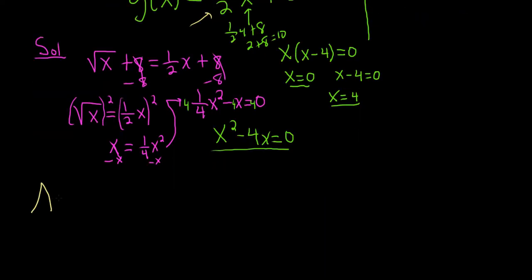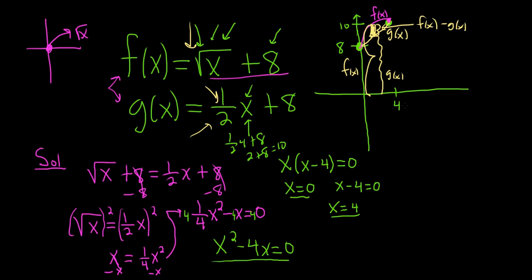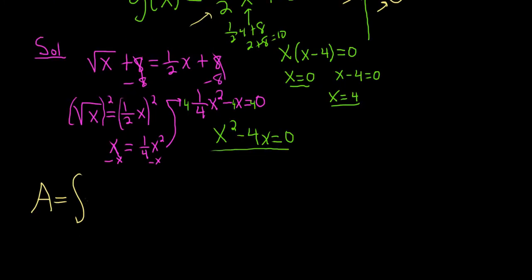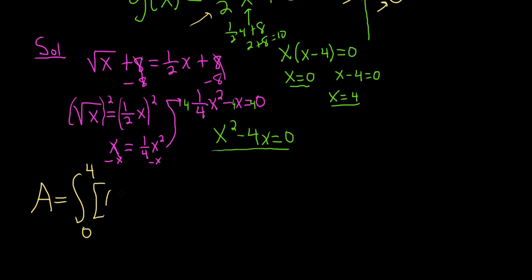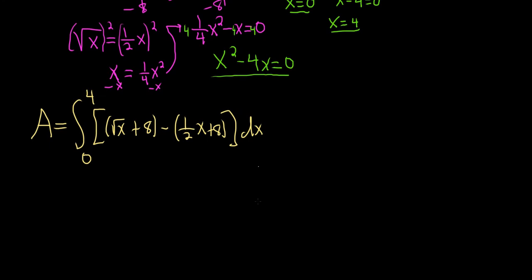So the area is given by the definite integral. So we're integrating from 0 to 4. It's x values because we're integrating with respect to x. And it's top minus bottom. So the topmost function is the square root of x plus 8. So square root of x plus 8 minus the bottom most function, 1 half x plus 8 dx. So now we just have to go through the process of working this out.